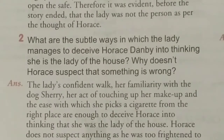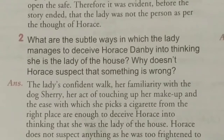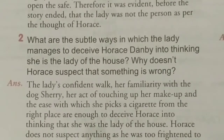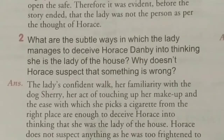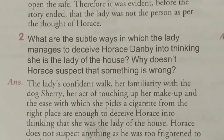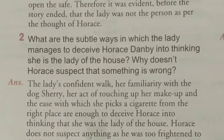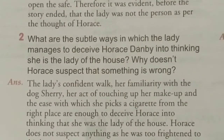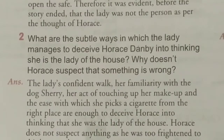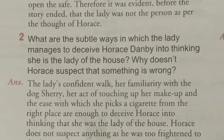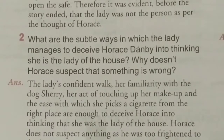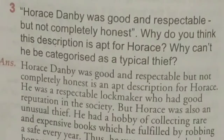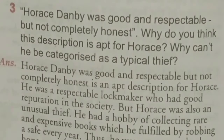Therefore, it was evident before the story ended that the lady was not the person Horace thought her to be. Question number two: What are the subtle ways in which the lady manages to deceive Horace Danby into thinking she is the lady of the house? Answer: The lady's confident walk, her familiarity with the dog Sherry, her act of touching up her makeup, and the ease with which she picks a cigarette from the right place are enough to deceive Horace into thinking she was the lady of the house. Horace does not suspect anything as he was too nervous to think properly.